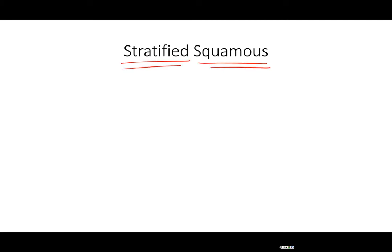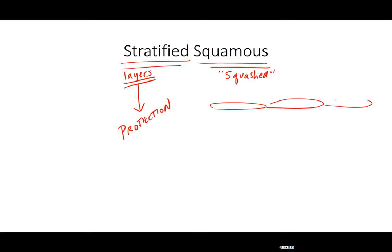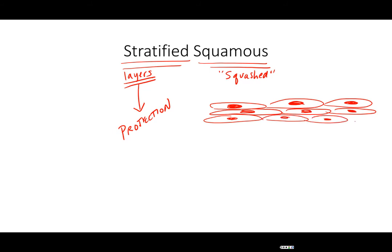Looking at our next tissue: stratified squamous epithelium. Stratified means we're going to see layers, and because we have layers, we should automatically think about this tissue as having the job of protection — it's going to be difficult to get material to cross through several layers of cells. We still have a squashed or flattened oval-shaped cell. Here we're going to be looking at the side view, so you'll see that flattened side with a flattened oval-shaped nucleus, and you're going to see it stacked — that's the layering.